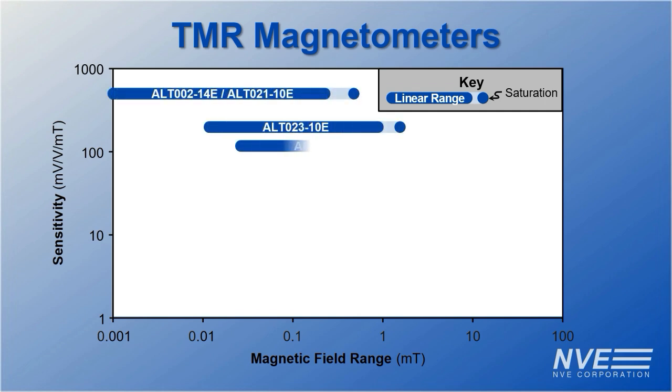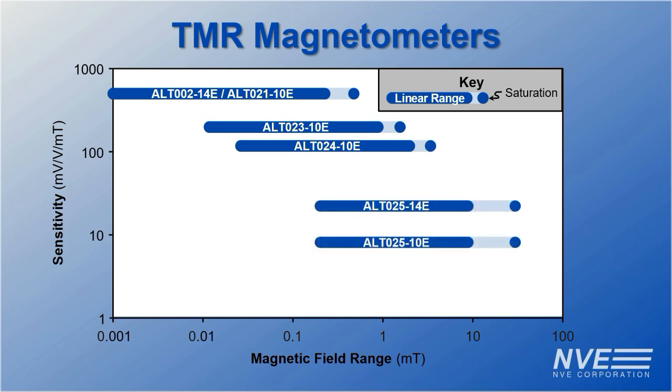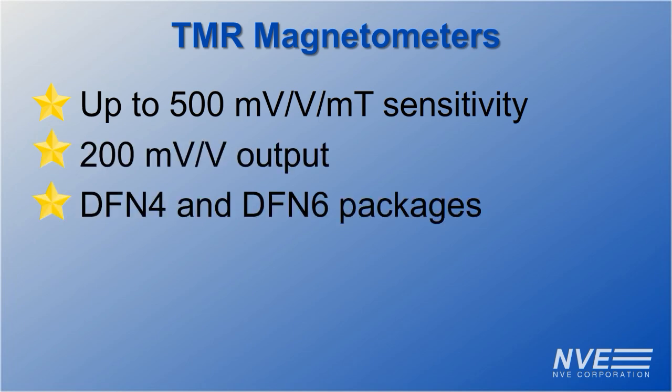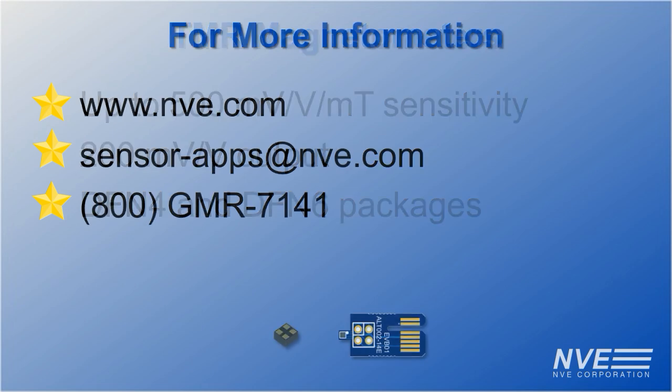The sensor we used has best-in-class sensitivity. Our ALT sensor line covers a range of applications. These parts are the little stars of the magnetometer world with high sensitivity, large outputs, and ultra miniature packages. They should be music to your ears to nail precision position sensing.